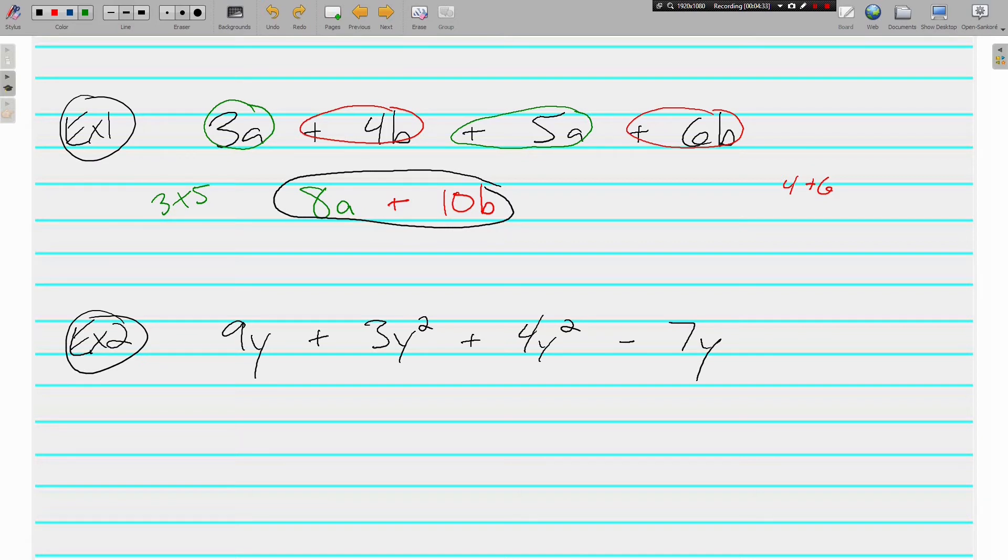Let's look at the next one. 9y plus 3y squared plus 4y squared minus 7y. What's alike? What are like terms? We've got a positive 9y and a negative 7y. So a positive 9 and a negative 7. 9 minus 7 gives us two y's. And then these are like terms because they both have a y squared. Can't combine them with the green ones because the green ones are just y to the first power. These are y squared. And we've got a 3y squared and a 4y squared. That's going to give us 7y squared. And that's it. We simplify. That's all we can do. We don't know how much y is so we can't take it any further.